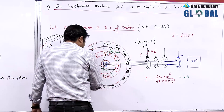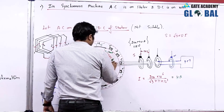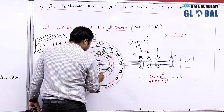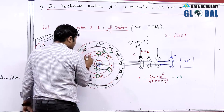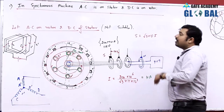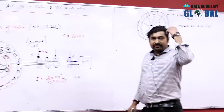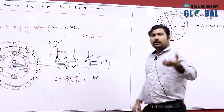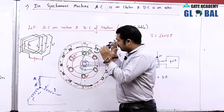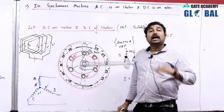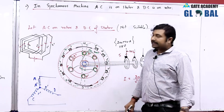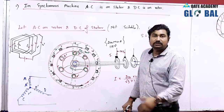Centrifugal force needs a very large cost to hold the conductors. Insulation cost for the slip rings is very high. Frequent maintenance is required. Even if we had enough money to handle centrifugal force and high insulation cost, effective cooling is still not possible if AC is on the rotor and DC is on the stator field. That is why we never prefer large synchronous generators to be designed with AC on the rotor and DC on the stator.